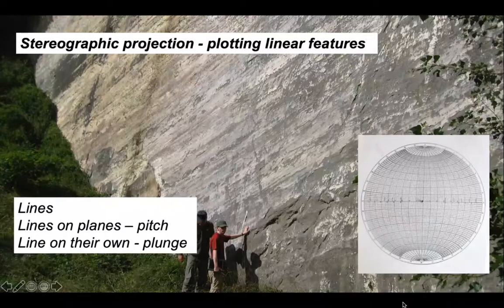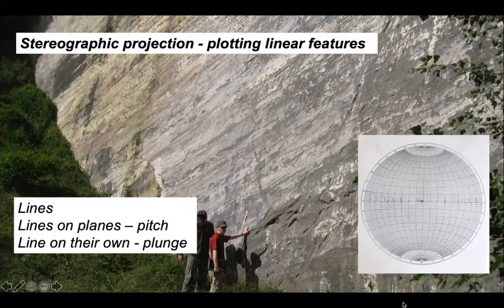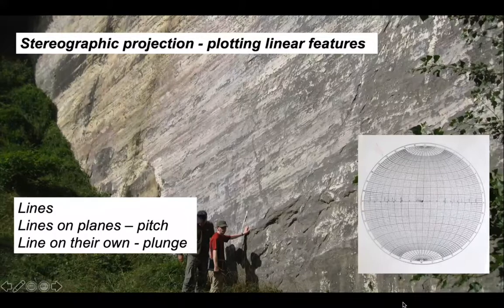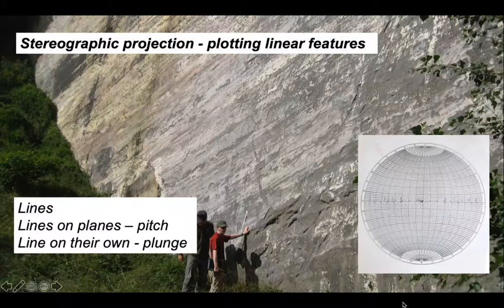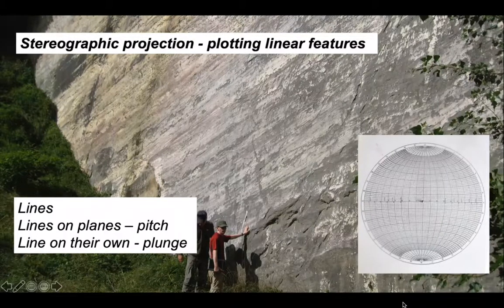We now have two methods for plotting lines. Lines occurring on planes — such as striations on a fault plane — are plotted by measuring the pitch, which requires the orientation of the plane and the pitch measurement. Lines can also be plotted in their own right by measuring the plunge and plunge direction. Both types of measurement can be plotted on stereographic projections, allowing comparison of different features from different places.